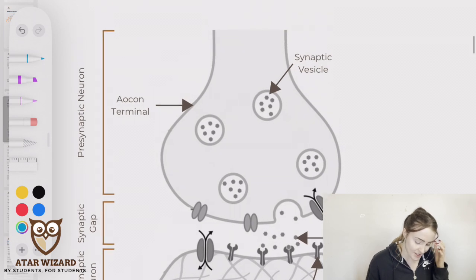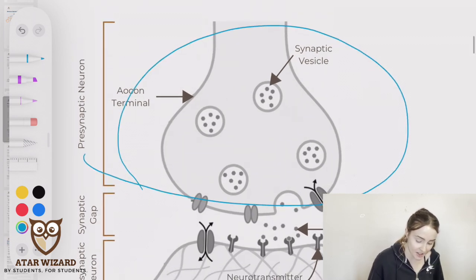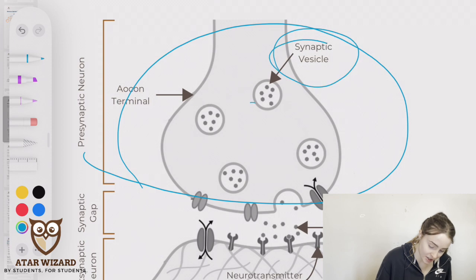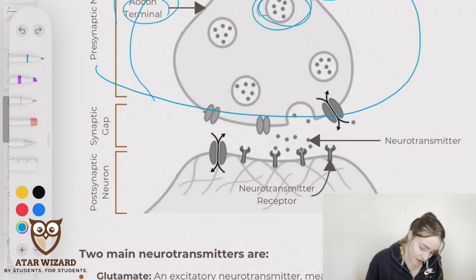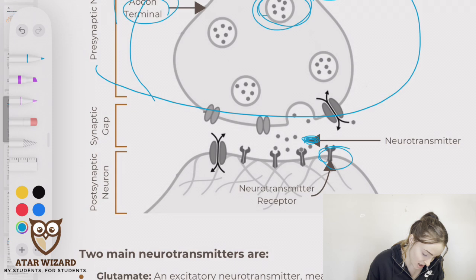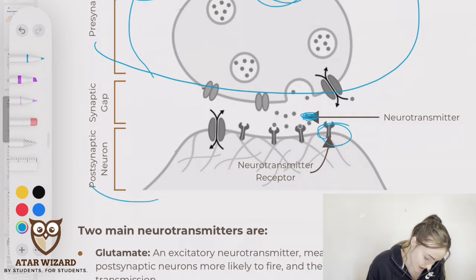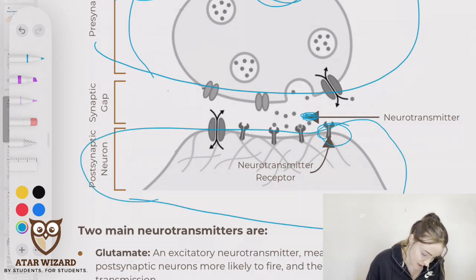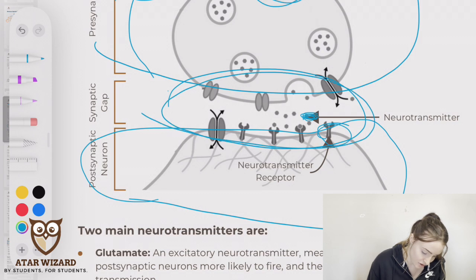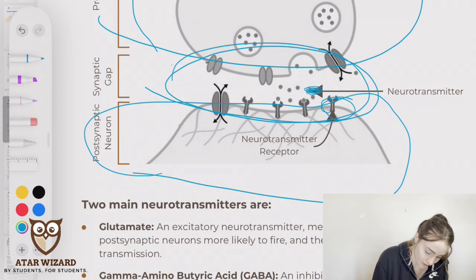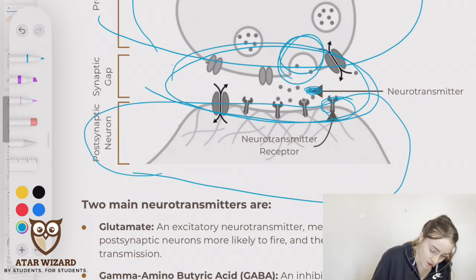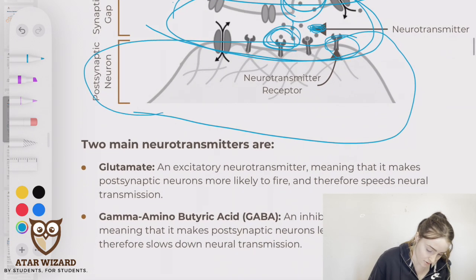The presynaptic neuron consists of the synaptic vesicle and the axon terminal. These are the little receptors, and that is the neurotransmitter. This is the postsynaptic neuron, and in the middle of the two neurons is the synaptic gap. You can see the neurotransmitters being released from the presynaptic neuron, travelling along the synaptic gap, and then coming to the postsynaptic neuron.